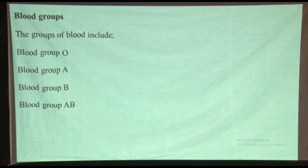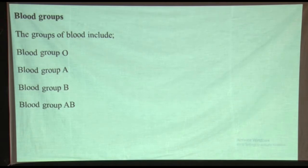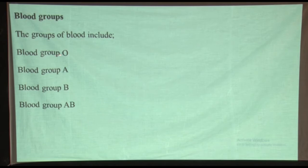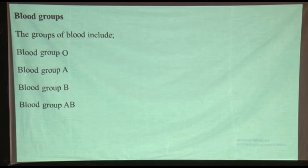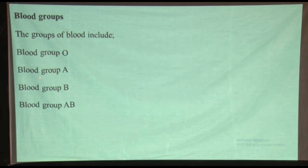Moving on, you can be asked about blood groups. Blood can be classified into four major groups. We can group them as blood group O — which is the universal donor, as it can easily donate to anyone. Then you have blood group A, blood group B, and blood group AB. These are the principal or major blood groups.